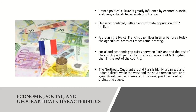France is densely populated with an approximate population of 57 million. Although the typical French citizen lives in an urban area today, agricultural areas remain strong. Social and economic gaps exist between Parisians and the rest of the country, with per capita income in Paris about 60% higher. The northeast quadrant around Paris is highly urbanized and industrialized, while the west and south remain rural and agricultural. France is famous for its wine, produce, poultry, grains, and geese.